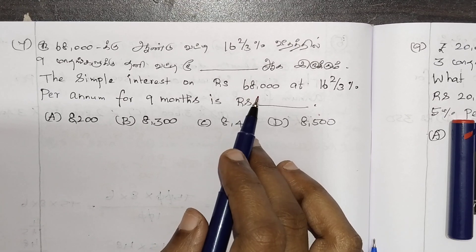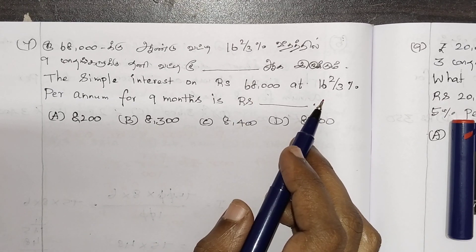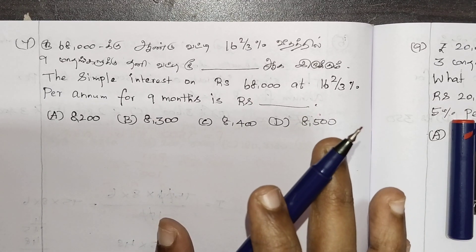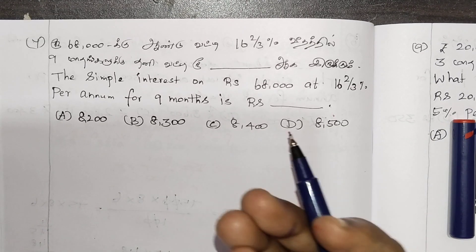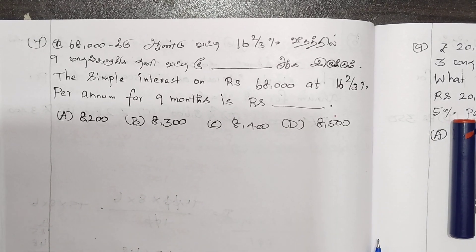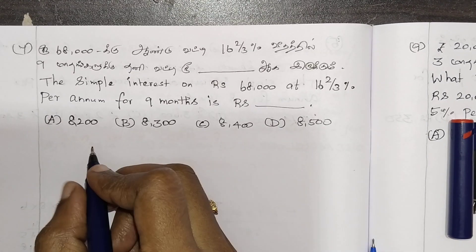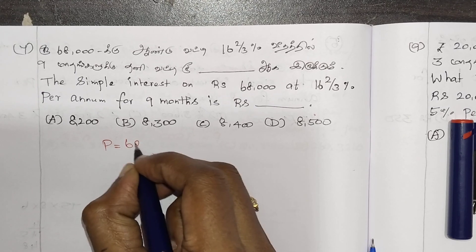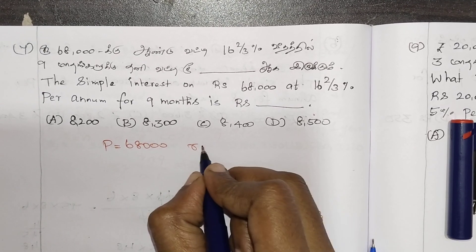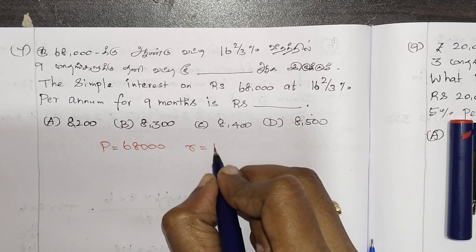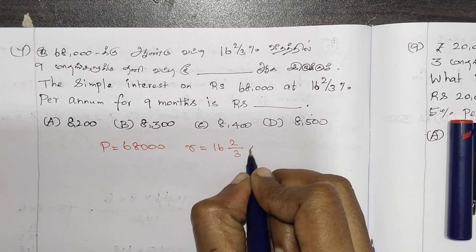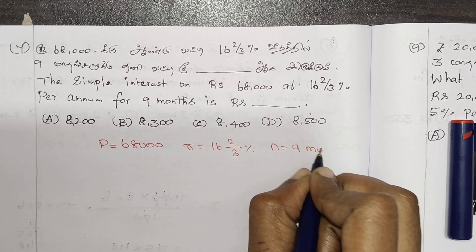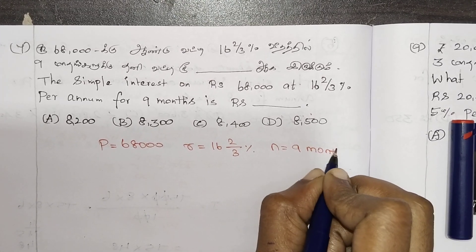When we get to the amount, the principal amount is 68,000. The rate of interest is equal to 14 and 2/3 percentage per annum. We will get the time as 9 months.